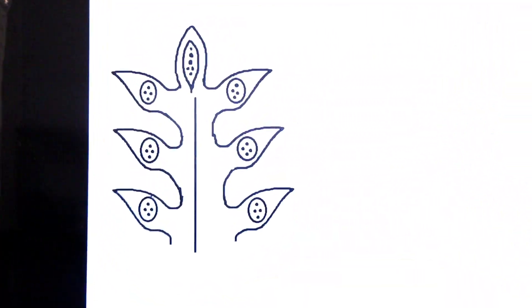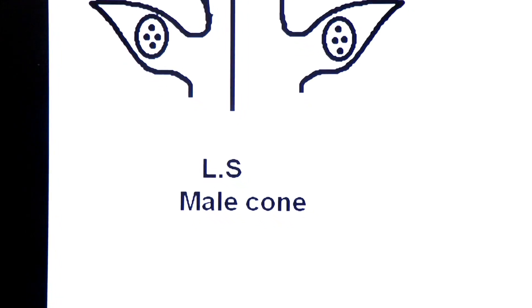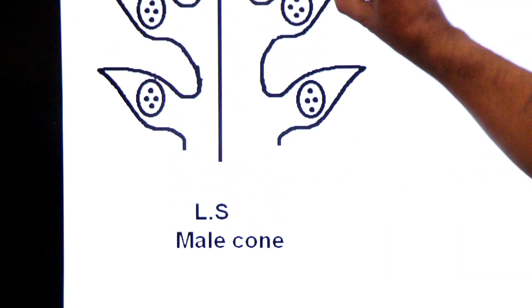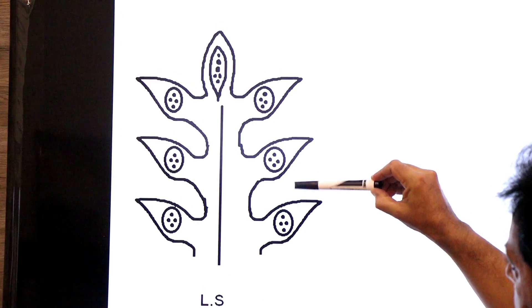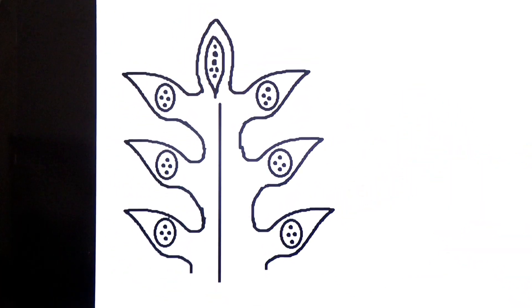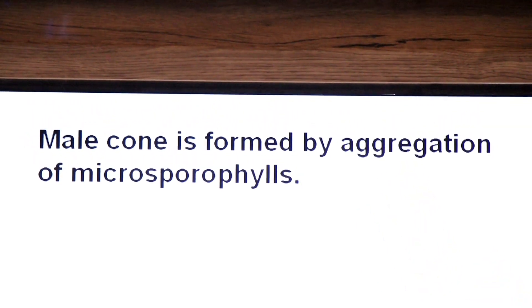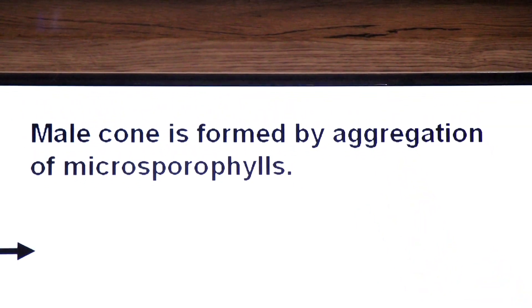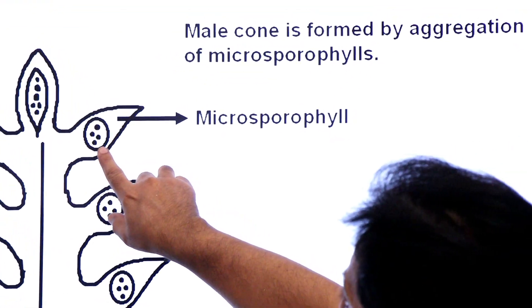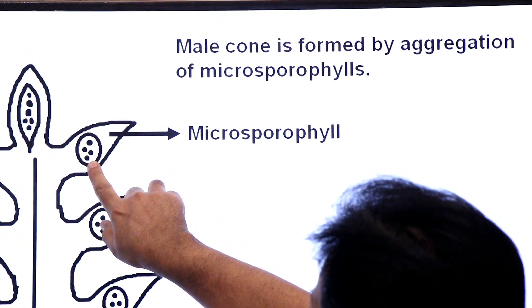The microsporangia contain microspore mother cells that divide and generate microspores. This diagram shows the longitudinal section of the male cone with its central axis. It is made up of microsporophylls — modified leaves containing microsporangia. Inside each microsporangium, there are many microspore mother cells.